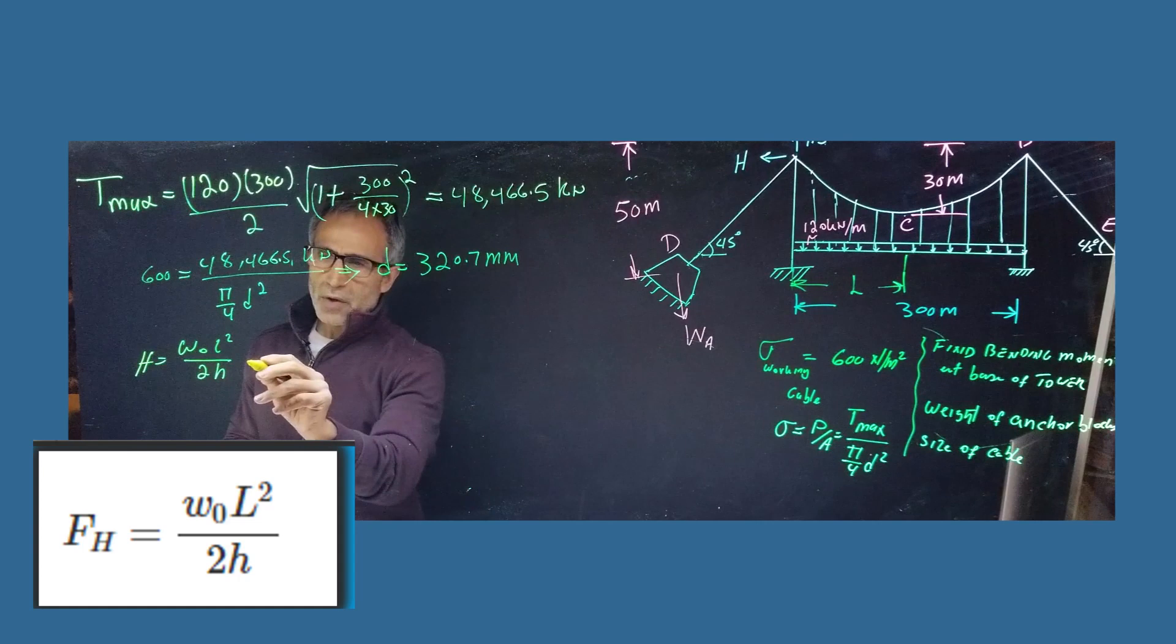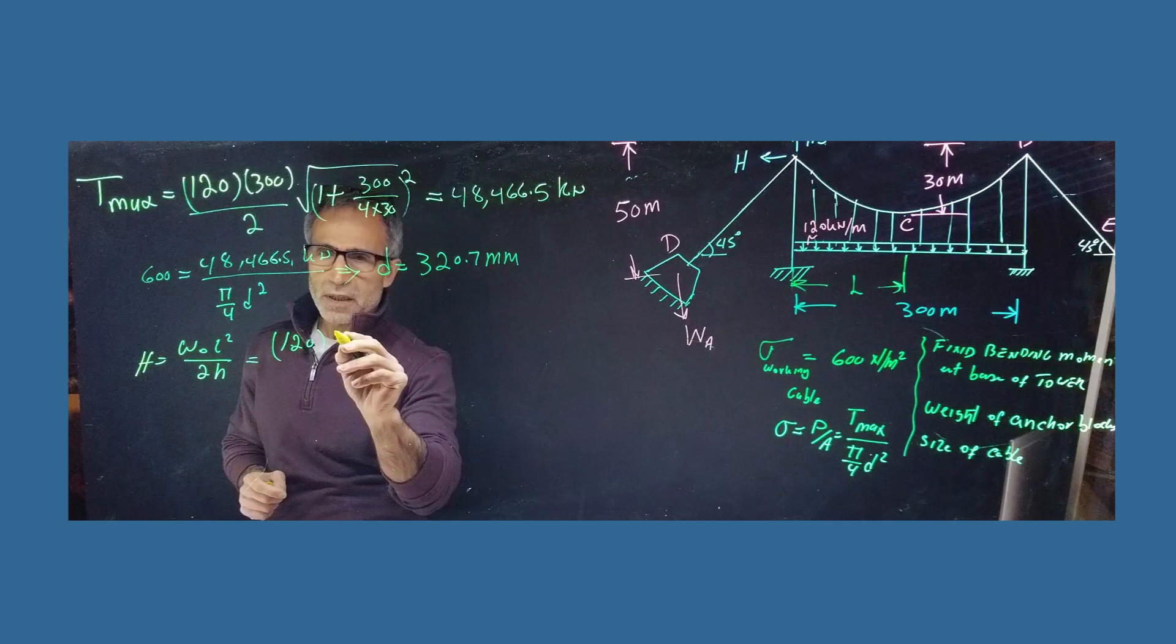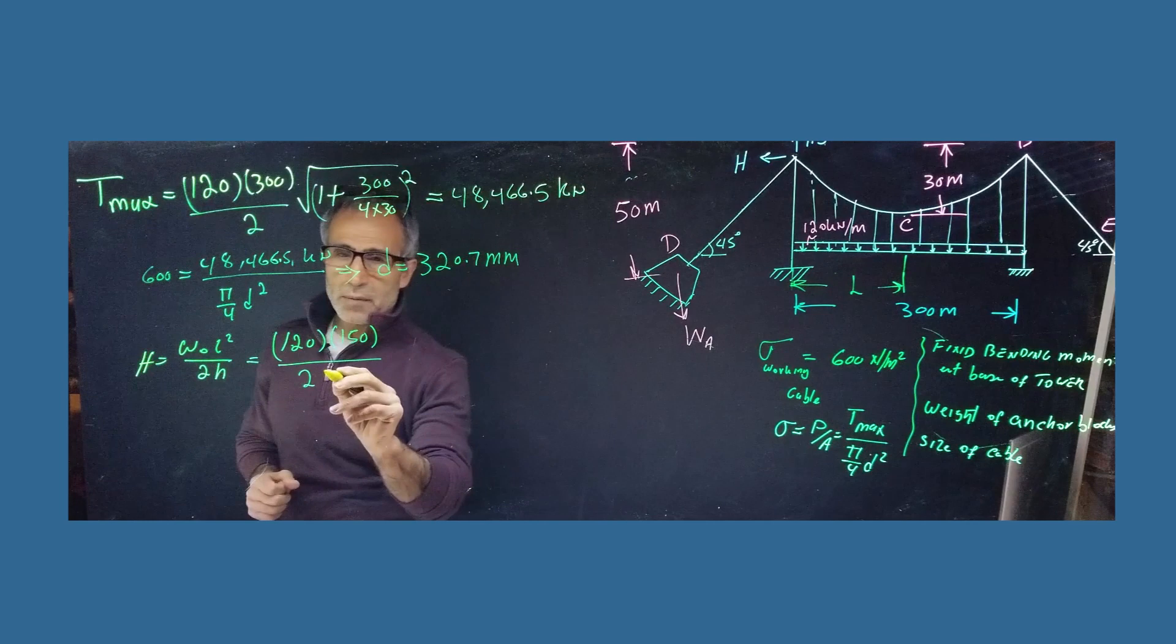And again, based on what we had on the board, the formula for that is going to be, we found out that H was equal W0 L squared divided by 2 times H, where L being divided by 2. So now we're going to have, we had 124 W, and L was basically 150.